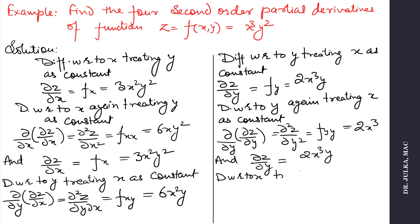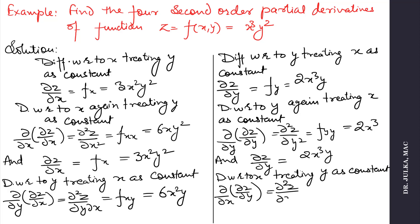Differentiating ∂z/∂y with respect to x, treating y as constant, gives ∂²z/∂x∂y, or f_yx, which equals 6x²y. Note that ∂²z/∂y∂x and ∂²z/∂x∂y are equal in this case.